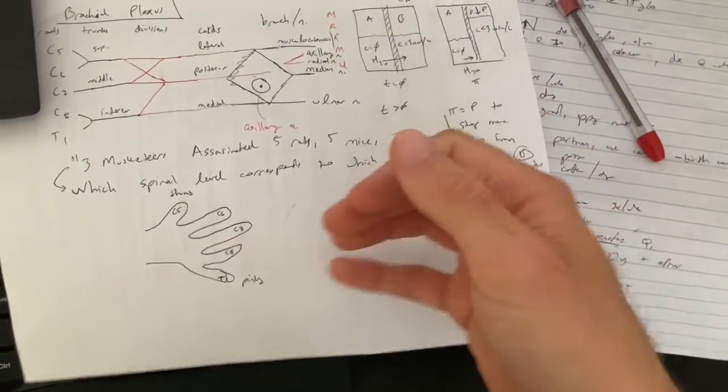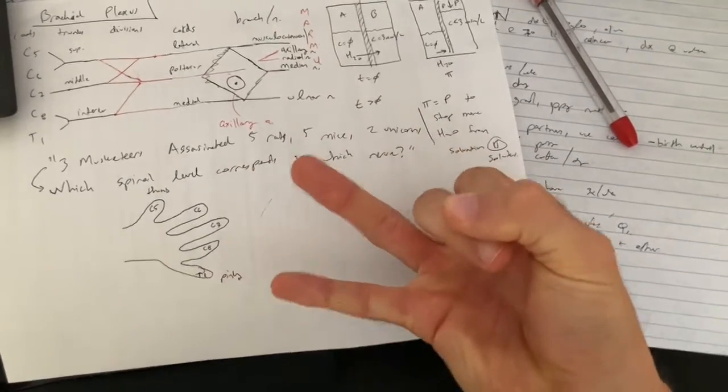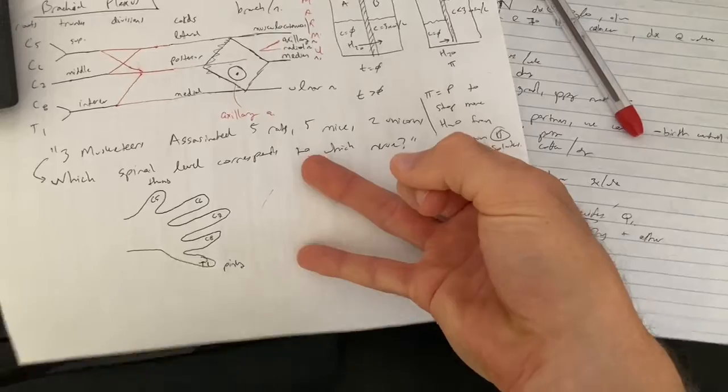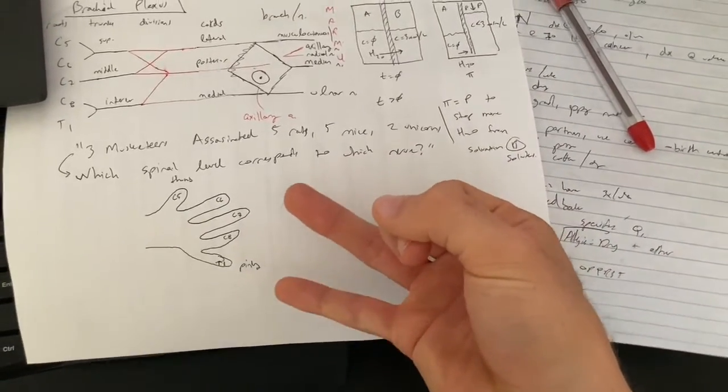Finally, you're gonna have your pinky. The two unicorns, you do this. Your ulnar nerve, the unicorn, corresponds to the two unicorns, C8 and T1.